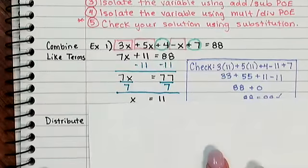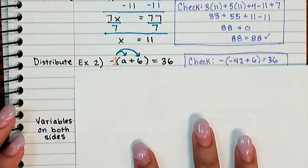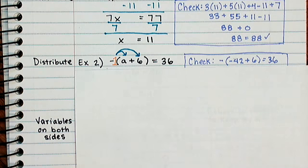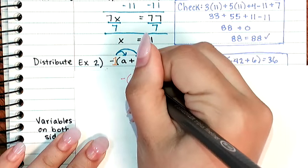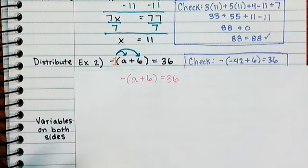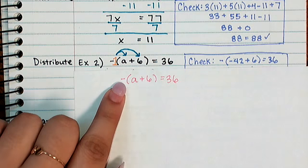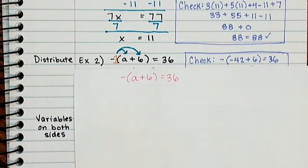For my next example, I looked at one where I had to distribute. So for this one, it's a little bit hard to see since I had already written over it, but I started off with negative parentheses a plus 6 equals 36. So the main thing to note here is that there is no number on the outside that we can see. There's a negative sign.